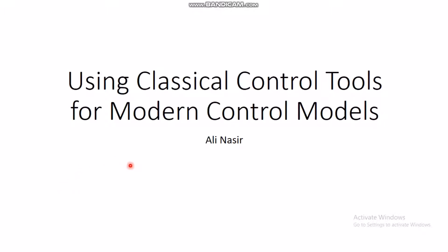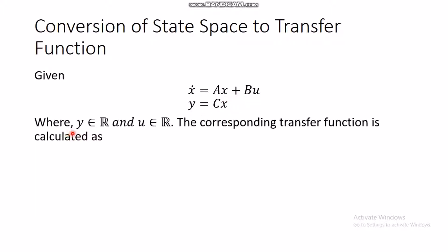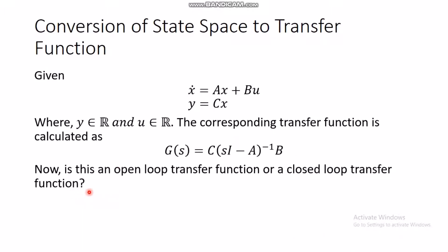This video will cover that aspect. First, conversion of state space to transfer function — this should be taught at the undergraduate level. If you have a system x-dot = Ax + Bu, y = Cx, for single input single output systems, the corresponding transfer function is G(s) = C(sI - A)⁻¹B. For multi-input multi-output systems there would be a transfer function matrix, not a single transfer function.